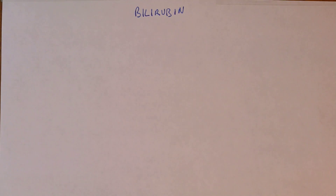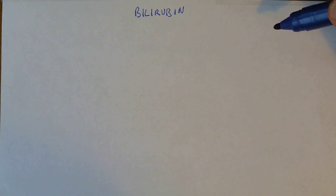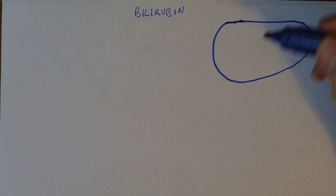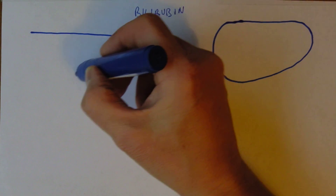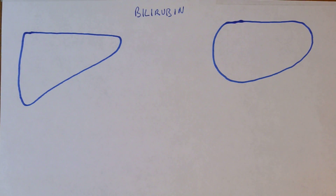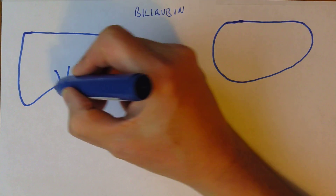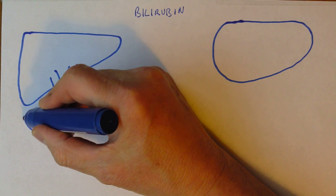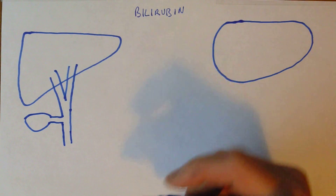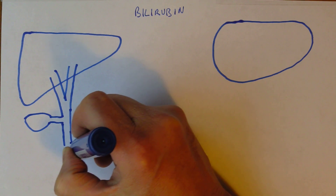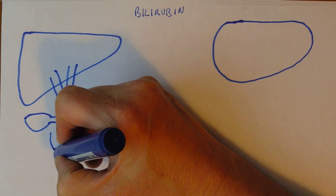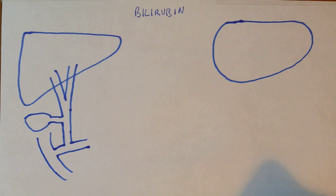Let's look at the physiology of bilirubin. In the top left of the abdomen we have the spleen, and in the top right of the abdomen we have the liver. Coming from the liver we have the bile ducts, the gall bladder, and going down the bile ducts are going to join up with the pancreatic duct and together these ducts are going to go into the duodenum, the first part of the small intestine.